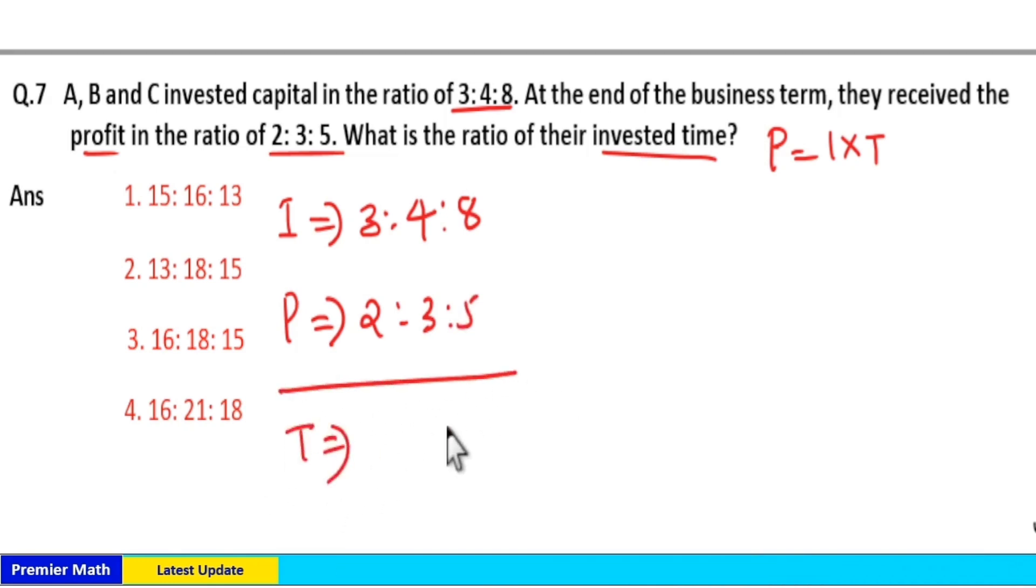From this, time ratio is equal to profit by investment. Profit by investment means 2/3 is to 3/4 is to 5/8 is the time ratio. Now take the LCM of the denominator. LCM of 3, 4, 8 is equal to 24.